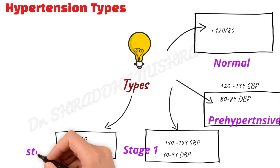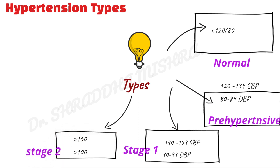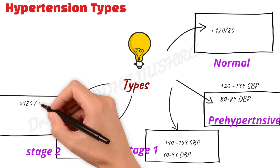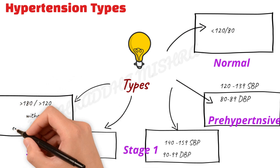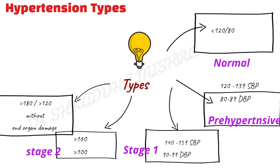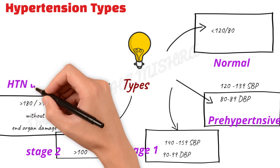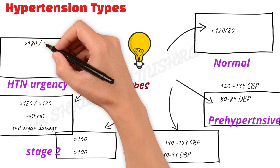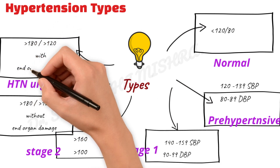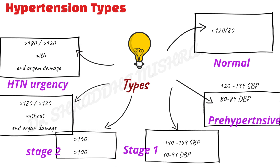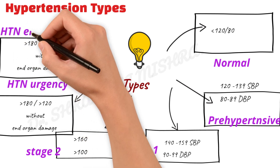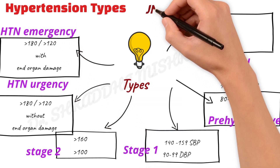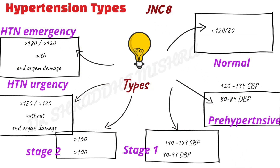Stage two is more than 160 and more than 100. After that, there are two very important terms: if the BP is more than 180 by 120 without end organ damage — meaning there is no damage to kidney, heart, and other vital organs — we call it hypertensive urgency. And if there is end organ damage with BP more than 180 by 120, then we call it hypertensive emergency. These are the different types according to JNC8.